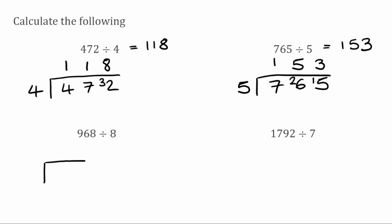Now we've got 968 divided by 8. 8 fits into 9 once because 8 times 1 is 8, leaving a remainder of 1. Carrying that over to the next digit, we want to do 8 into 16. That goes twice because 8 times 2 is 16 exactly, leaving no remainder. Then 8 fits into 8 exactly one time. So our answer to 968 divided by 8 is 121.